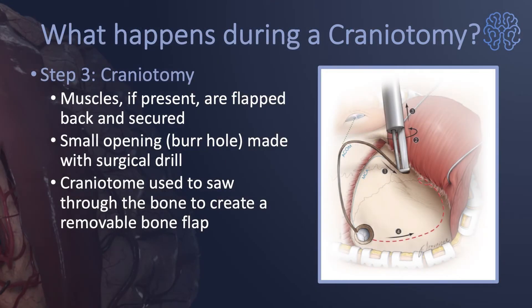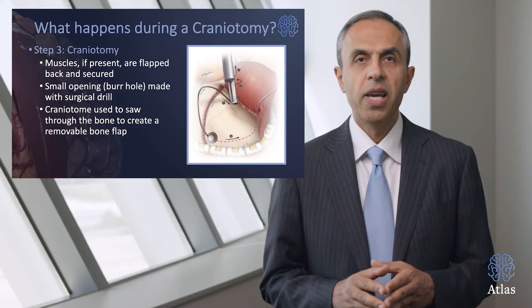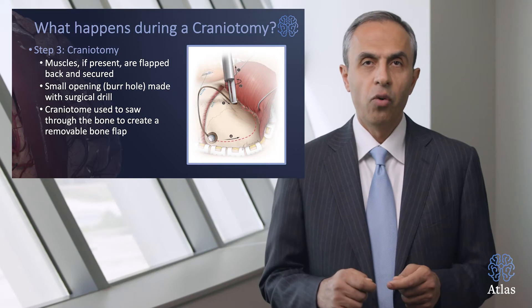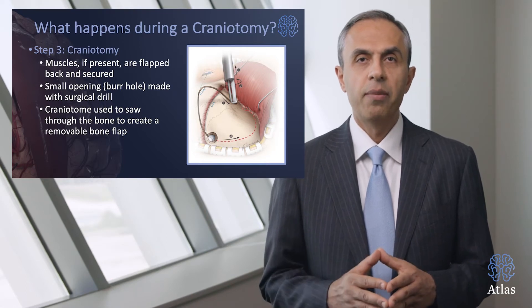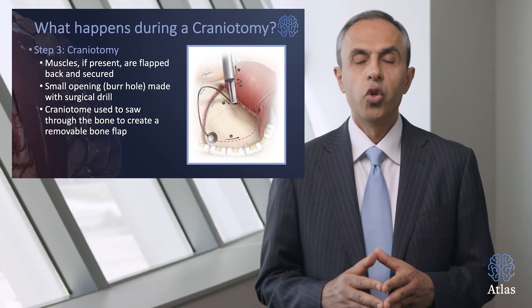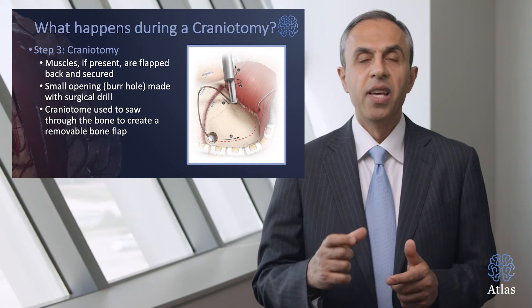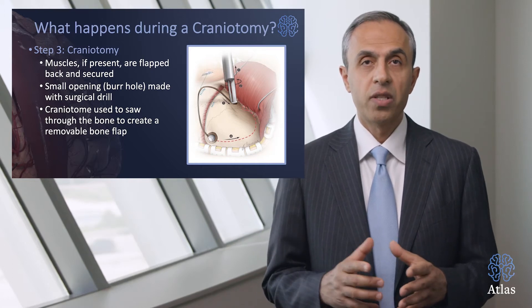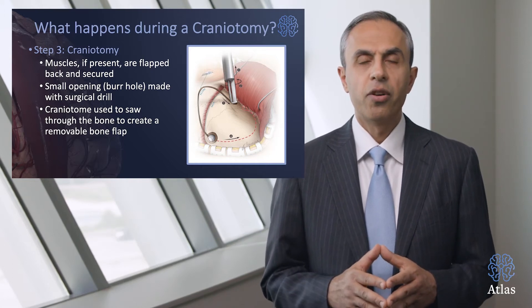Step three is what happens during the craniotomy. The muscles, if present over the skull, are flapped back and secured in place. A small opening — in other words, a burr hole — is made with a surgical drill. The craniotome, another specific drill type, is used to saw through the bone and lift a piece of skull of adequate size to conduct the procedure.